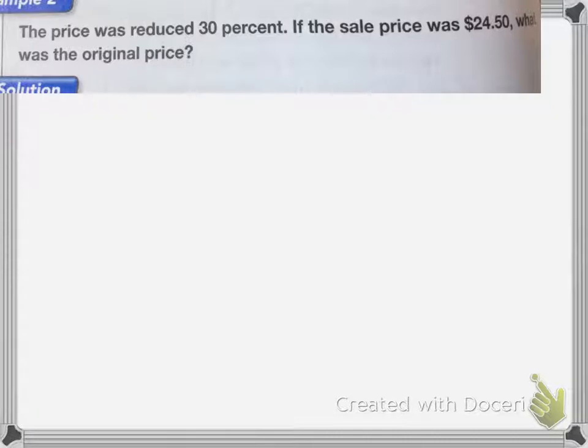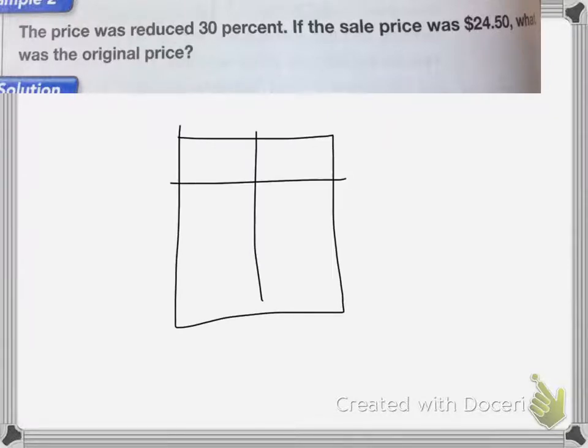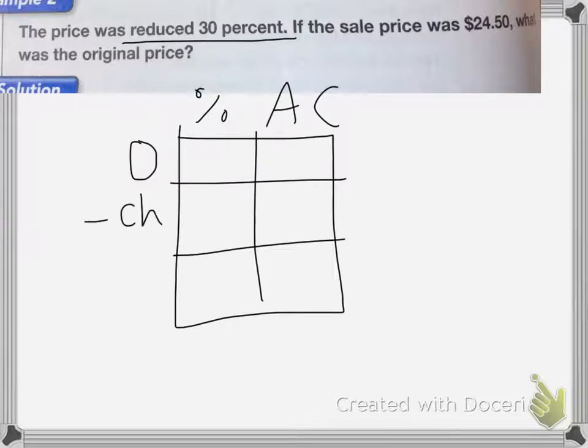With this one, the price was reduced 30%. If the sale price was $24.50, what was the original price? Again, you're going to make your ratio box. You have your percent and actual count. You have your original amount. This time we're reducing 30%, so it's going to be a minus change, and then your new amount.